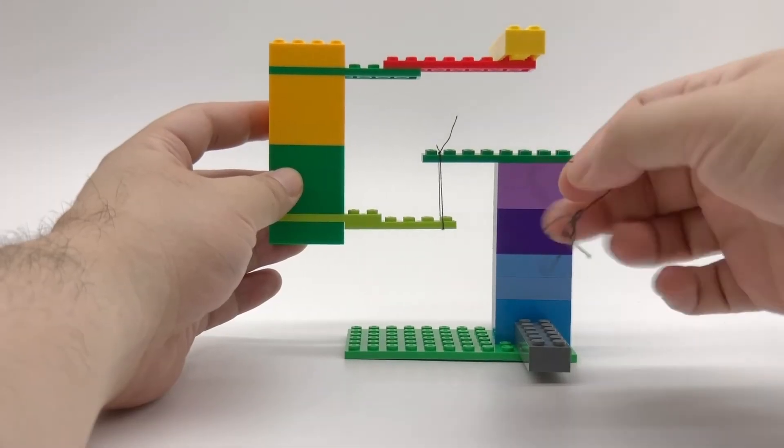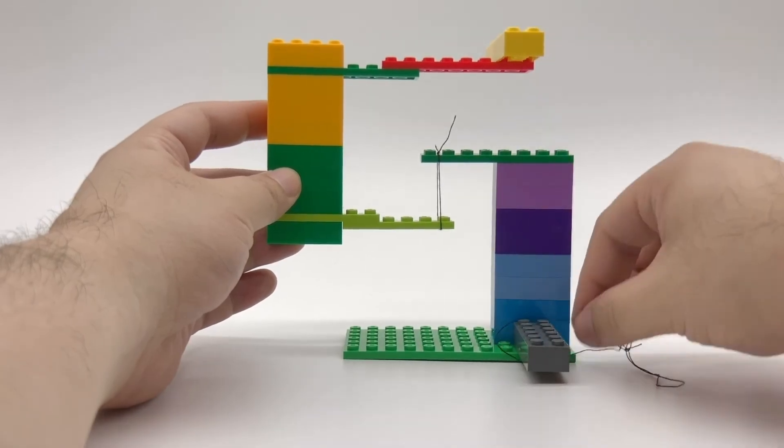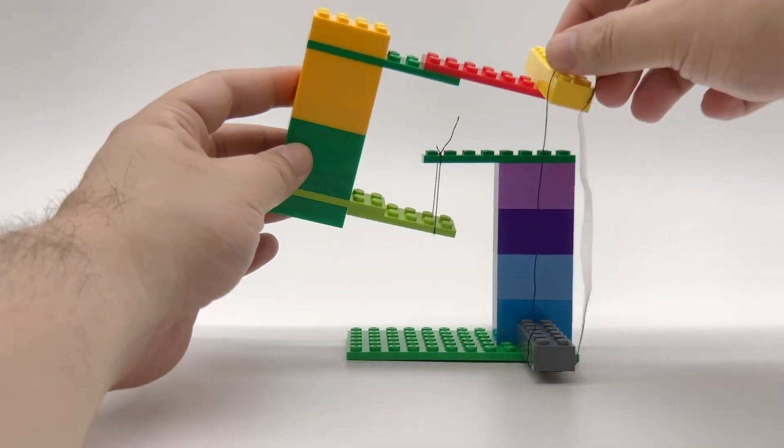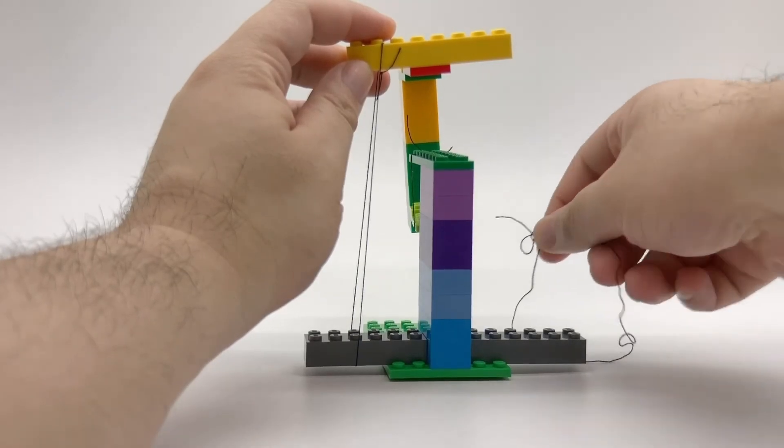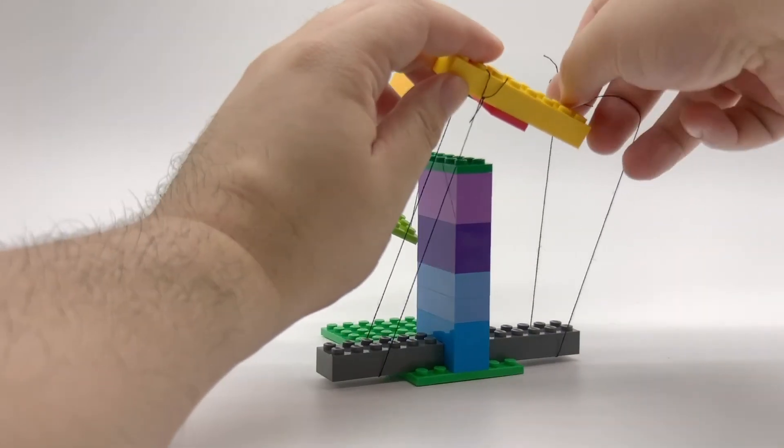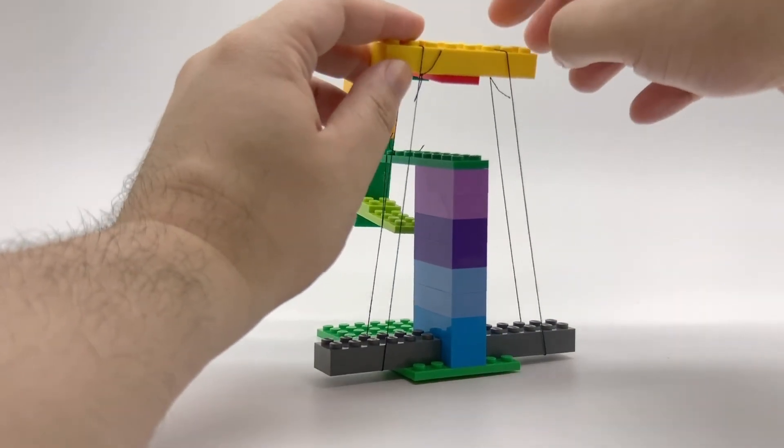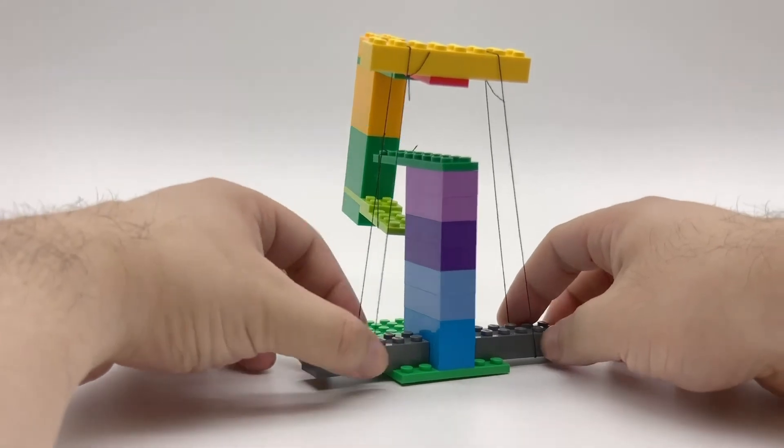I made these two equal loops out of some string earlier. This part might be a little tricky to do by yourself, so get an adult or a friend to lend an extra hand. And there you go. A balanced tensegrity structure.